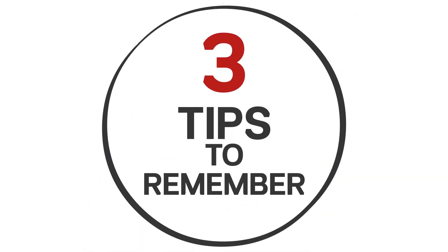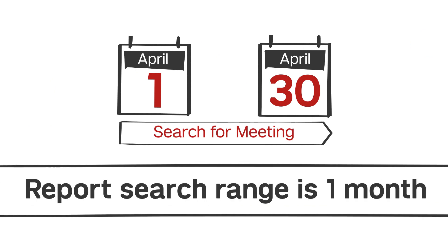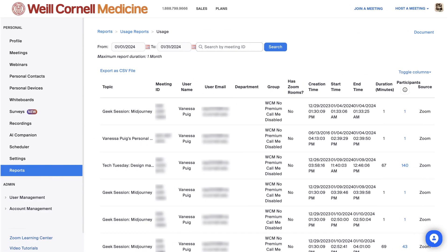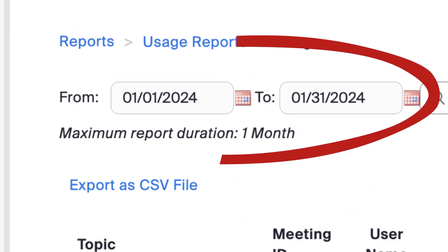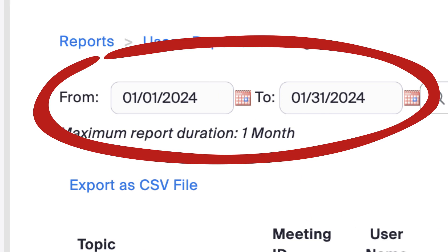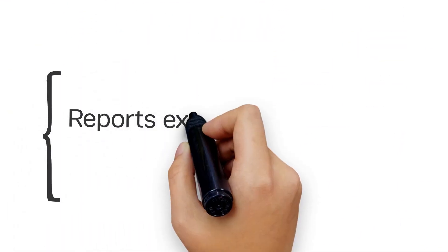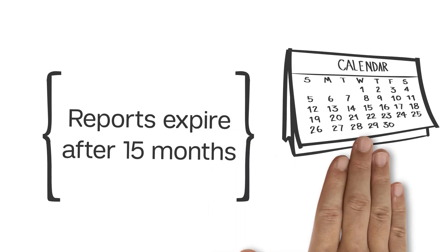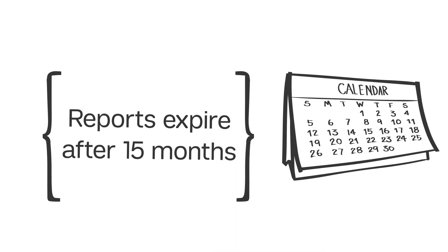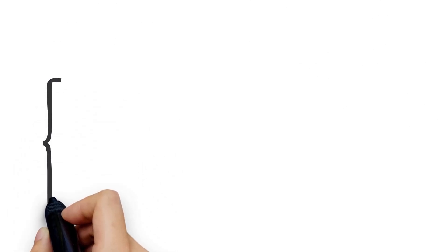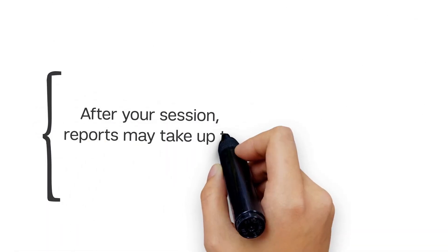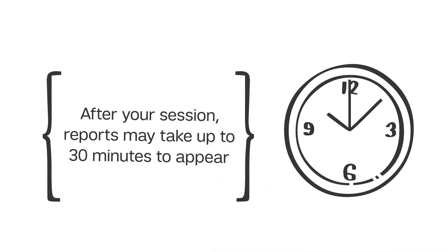When using Zoom reports, keep these three things in mind. One is that the search range is one month, so if you have a session from a few months ago that you'd like to look up, make sure you're searching in the correct range. Another detail is reports will expire after 15 months, so be sure to collect data in a timely manner. Reports will also be deleted if you haven't started your meeting for 30 days and it expires. Finally, once your meeting ends, it may take up to 30 minutes for Zoom to generate your reports.